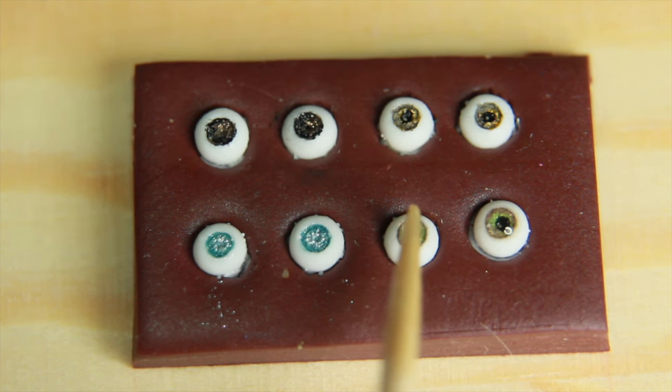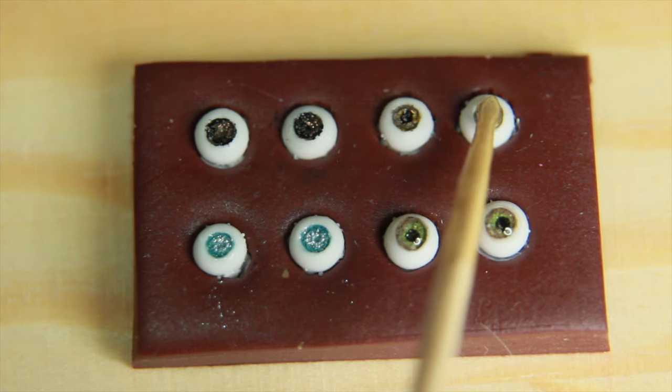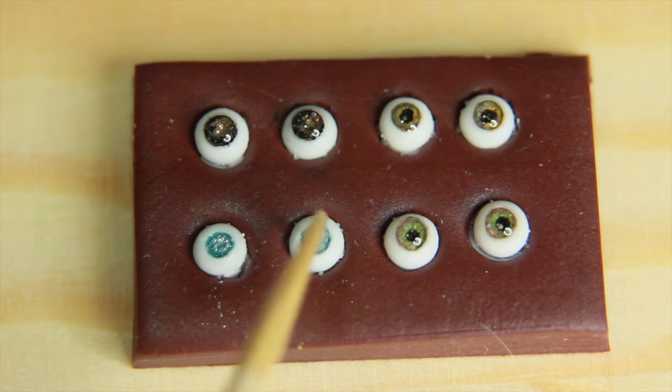Now I will add epoxy resin to it, making sure that I add enough to make a puffy rounded shape over the iris.